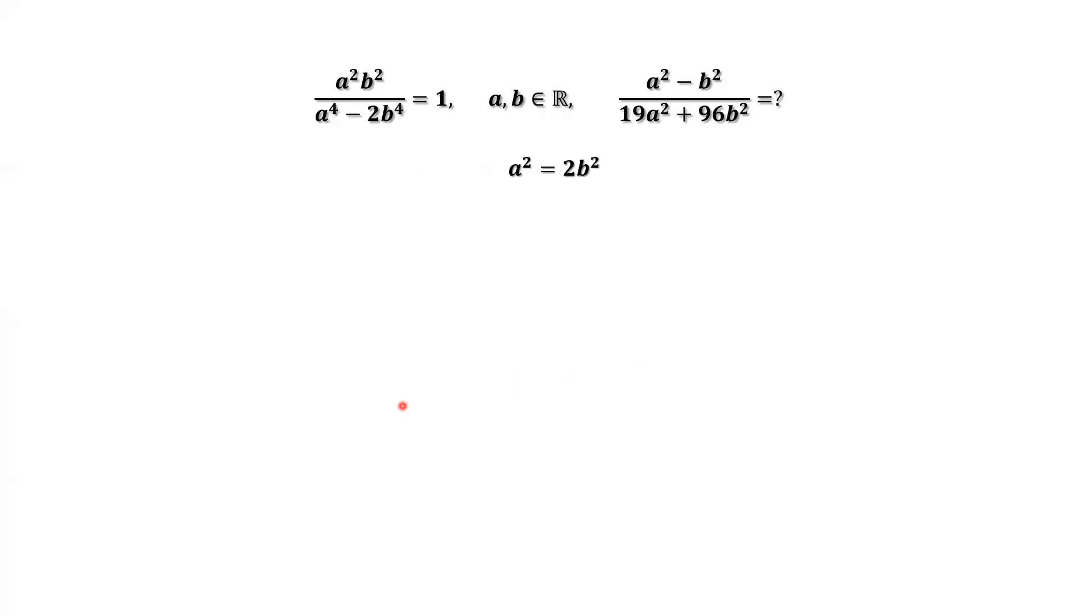Now, we are ready to derive the result. a squared minus b squared divided by 19a squared plus 96b squared. We replace a squared by 2 times b squared, 2 times b squared here and here. Then we have this part.